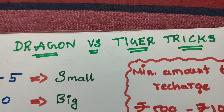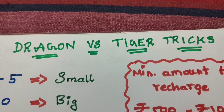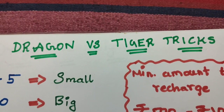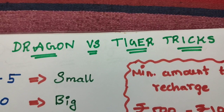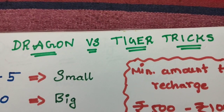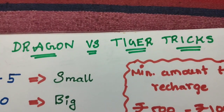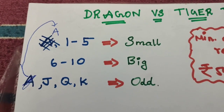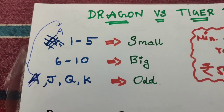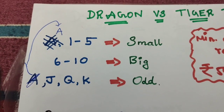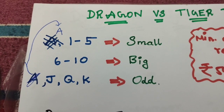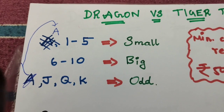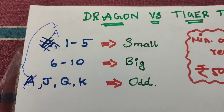Now I am going to show you a full detail. First, let's start with the card values. A is 1, J is 11, Q is 12, K is 13.